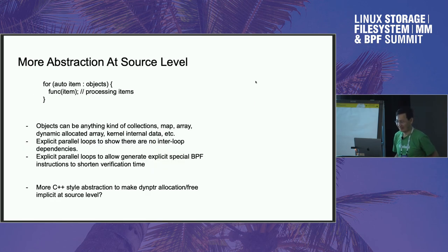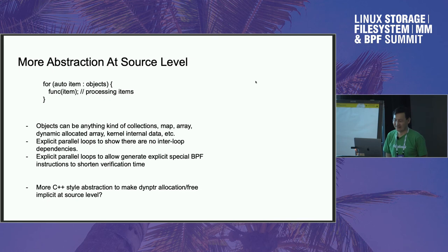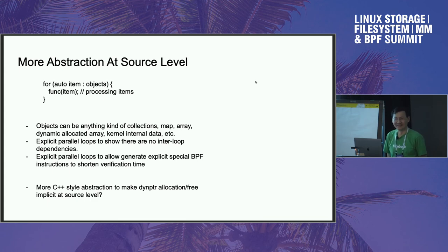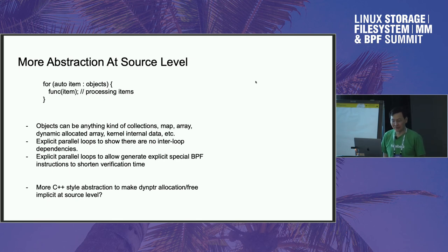Audience question: how hard would it be to teach the compiler to transform loops like this into bpf_loop calls with a callback — extracting the loop body into a callback and writing it as a bpf_loop call? Response: it's potentially doable in the Clang front end, though there might be pushback from the Clang community since it's conceptually similar to what compilers do for async transformations. There is a precedent from the C++ side, and we may be able to reuse code from there.